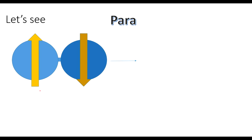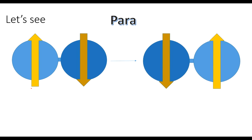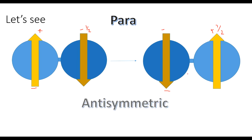For para hydrogen, if we exchange the nuclei, a spin reversal happens. In the first position it was +½ spin, but after exchange it becomes −½ spin. In the second position it was −½ and becomes +½. Because there is a sign change, para hydrogen is anti-symmetric.